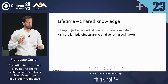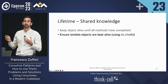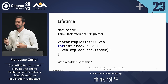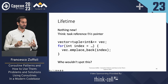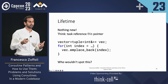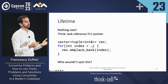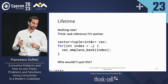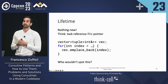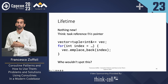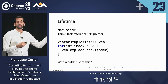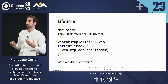So we add another entry to our knowledge: we need to ensure that lambda objects are kept alive. I would argue this is nothing new — we just need to know that the task captures the `this` pointer. Once people are familiar with the fact that there's this reference, it's easy to catch in code reviews.